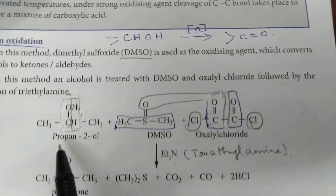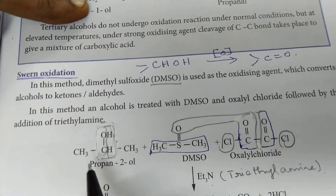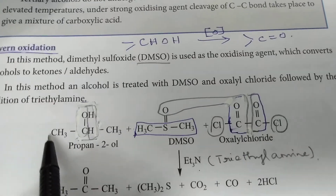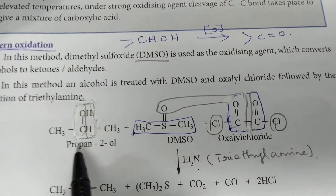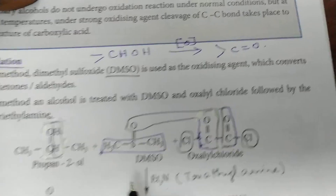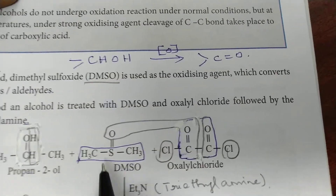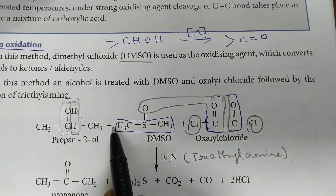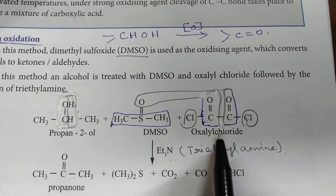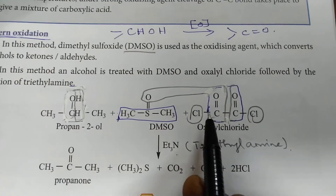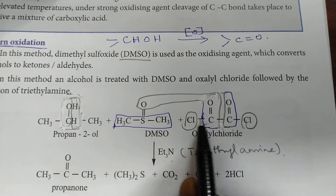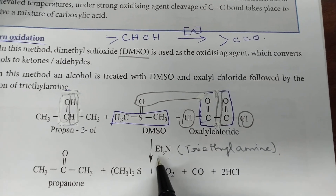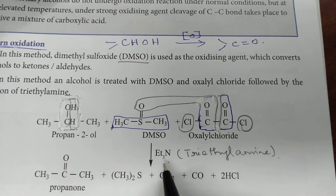So how does the reaction take place? Look at the equation given on page number 117. Propan-2-ol is taken — that is the secondary alcohol. And Dimethylsulfoxide — this is the structural formula for Dimethylsulfoxide — and Oxalyl Chloride. Oxalyl Chloride has two chlorine atoms bonded with two carboxyl groups, in the presence of Triethylamine.